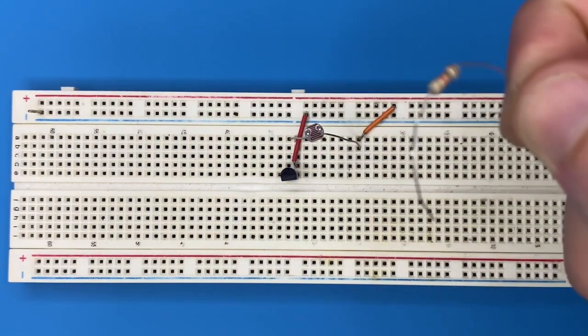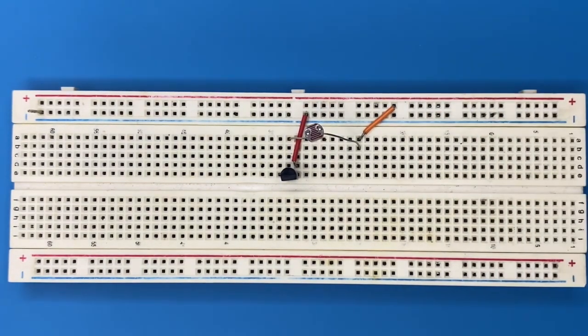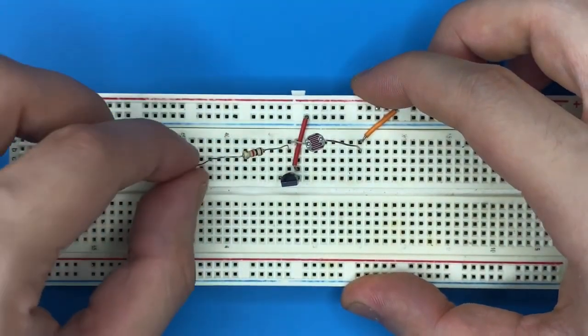Here's the 1 kilo ohm resistor. I'll connect it to the base of the transistor and to ground.